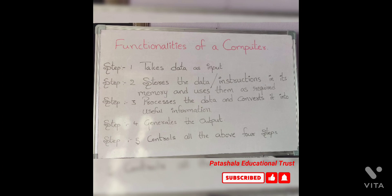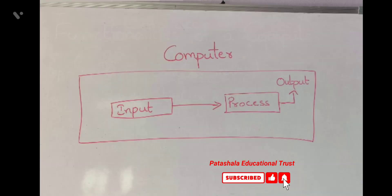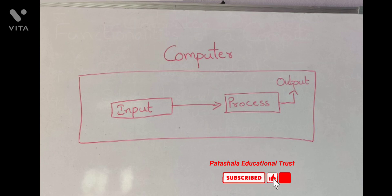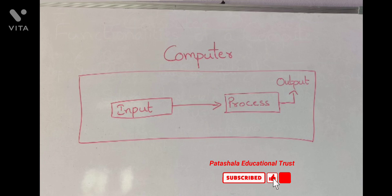This is how the input and its processing works. Once we give the input, the processing goes inside the system and then we get the necessary generated output. This is all about the computer and its functions.